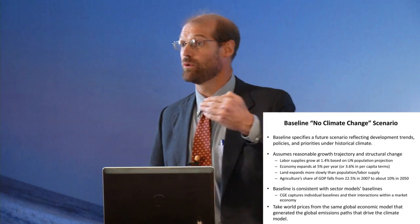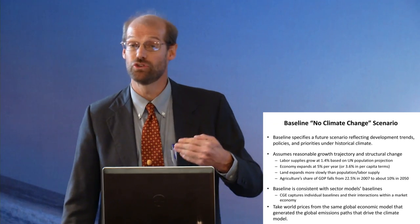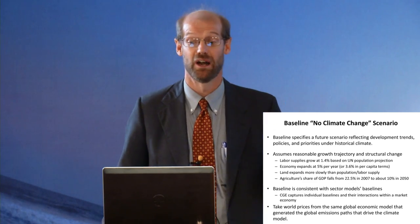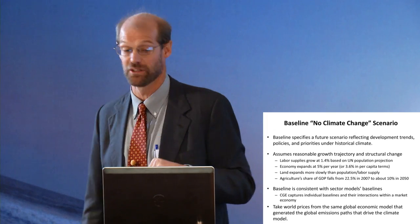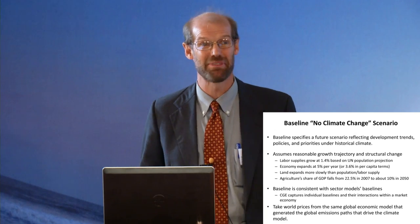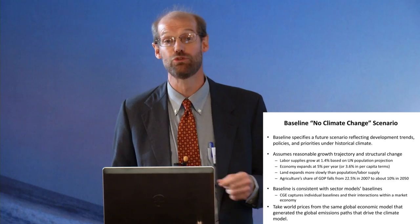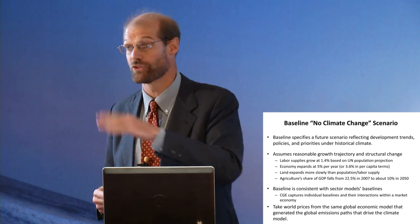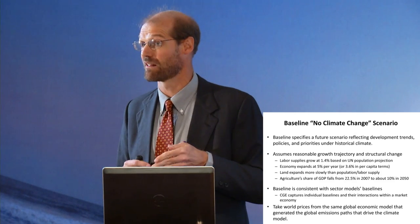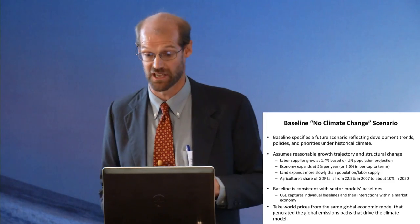To look at what we're doing, we want to isolate the effects of climate change. To do that, we're going to build a baseline scenario where there isn't climate change — a baseline where historical climate essentially repeats itself. What we want from this baseline scenario is something that's reasonable, that trucks forward into the future in a reasonable way. Then we're going to run things forward with alternative climates, and the differences or ratios of these two will isolate the climate effects.